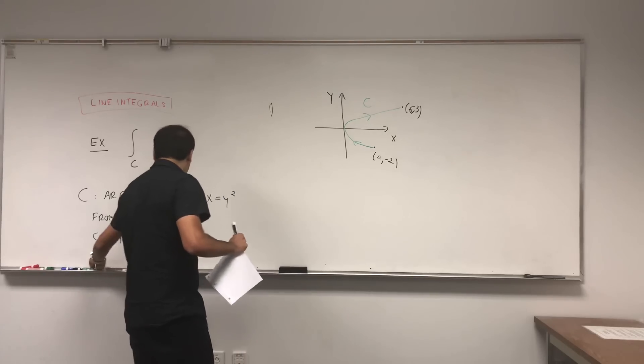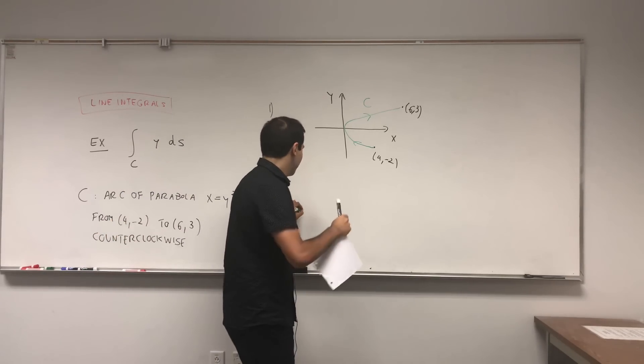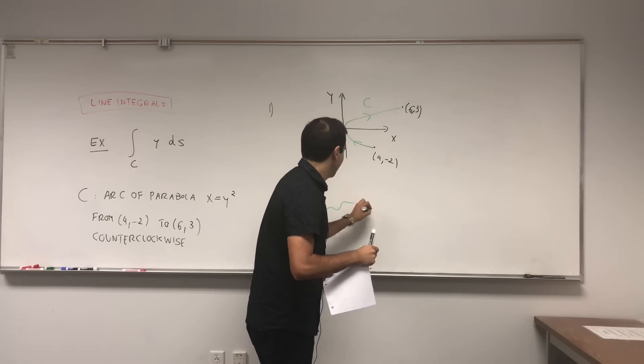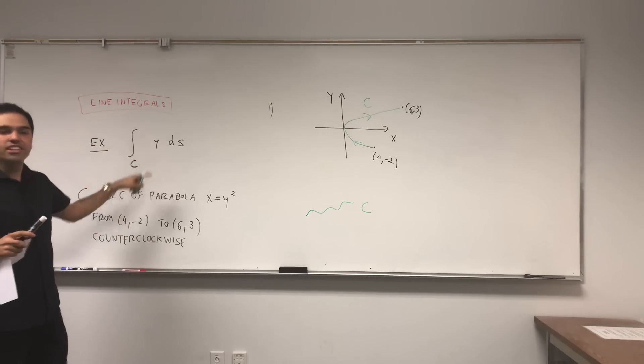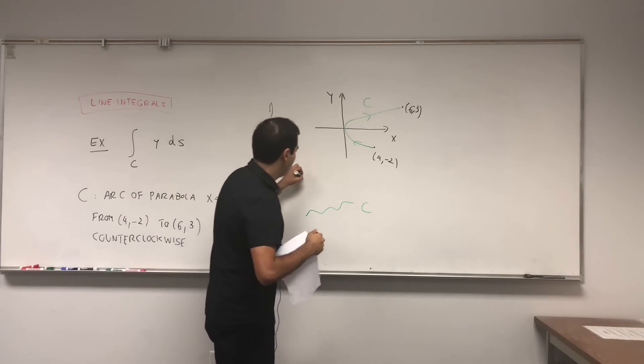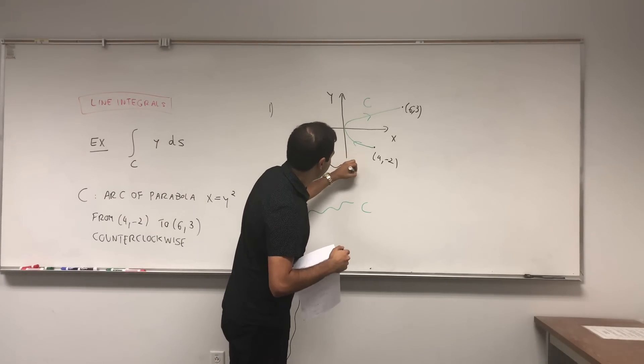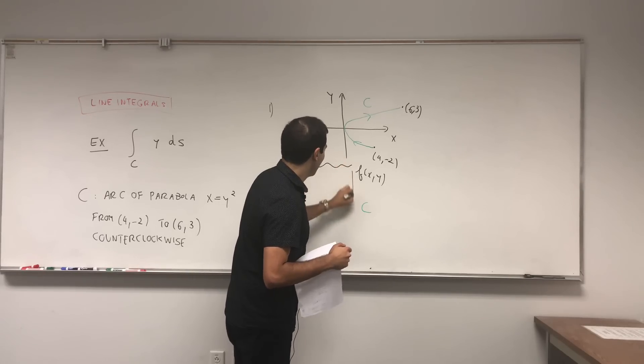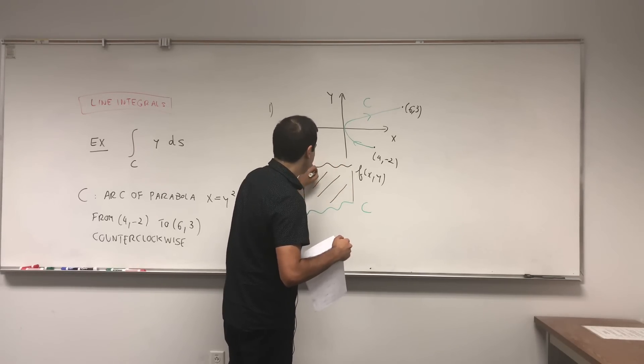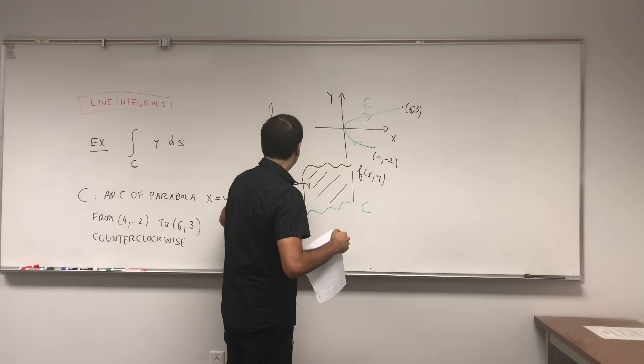And indeed it is in the counterclockwise direction. And what are we doing? Basically the idea is, and it's really cool, namely given a curve C, here C is like that, but in general it looks like that, and given a function F which in this case is just Y, and you have to think of this in 3D F of XY, the line integral calculates the area under that fence.